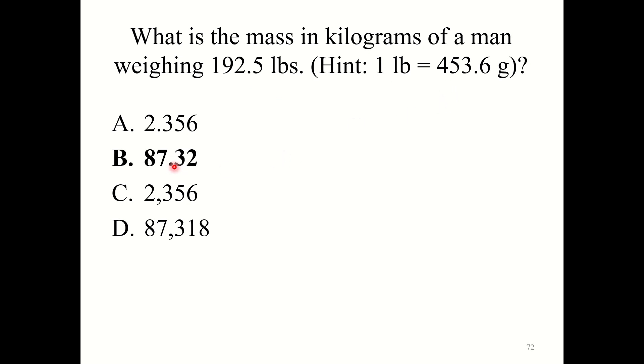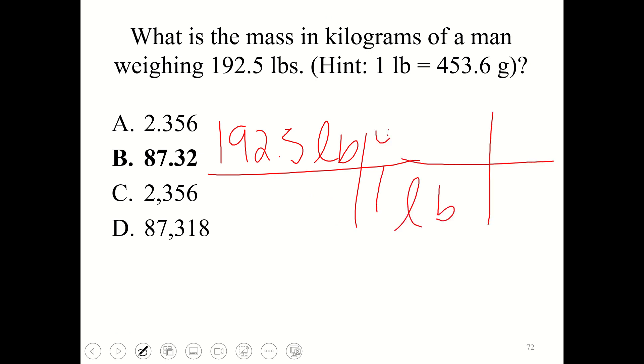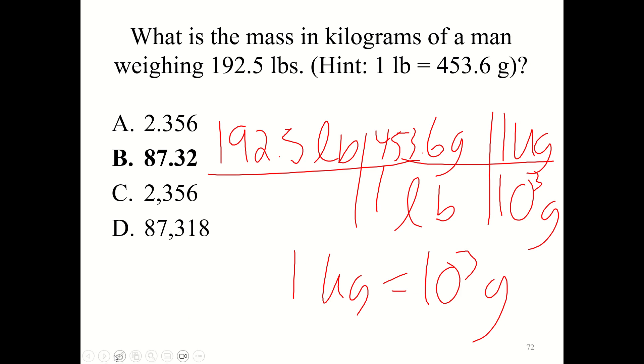Alright, the correct answer here is 87.32. Notice that I asked for the mass in kilograms. So first you would want to convert from pounds to grams. So that would be 192.5 pounds, and I'm going to convert that to grams using this conversion factor. And I write pounds on the bottom because I want pounds to cancel. Now I would need to convert from grams to kilograms. So I would write a conversion factor, so that would be one kilogram equals ten to the third grams. So I would write ten to the third grams on bottom and one kilogram up top. And when you work this math out, you should get B, 87.32 kilograms.